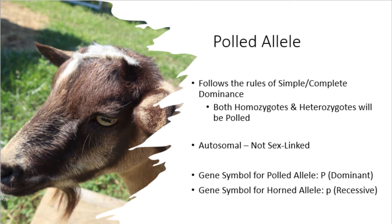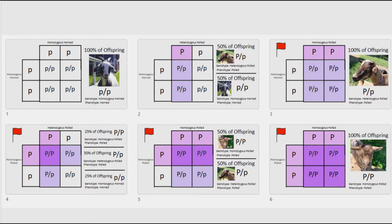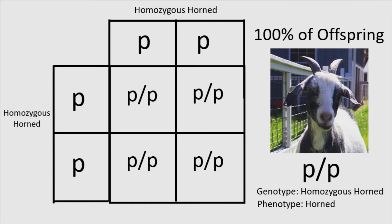Let's move on to our six different Punnett squares. The first pairing is horned × horned. Both parents are homozygous for the horned allele. Because the horned allele is recessive to the polled allele, if they are horned, you automatically know they are homozygous for the horned allele. This pairing will produce 100% horned offspring, as you cannot get polled offspring from two horned goats. If you do get polled offspring, I highly suggest doing a DNA test to confirm that there was no mix-up in the breeding plans.